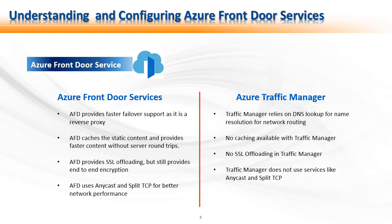Azure Front Door provides SSL offloading but still provides end-to-end encryption, while there is no SSL offloading in Traffic Manager. Traffic Manager does not use services like Anycast or Split TCP, but Azure Front Door Service uses both for better network performance. The primary difference is in how Traffic Manager relies on DNS lookups to route customer requests to back-end services. If a service endpoint becomes unhealthy, a customer will need to wait for their cached DNS result to expire before failing over.